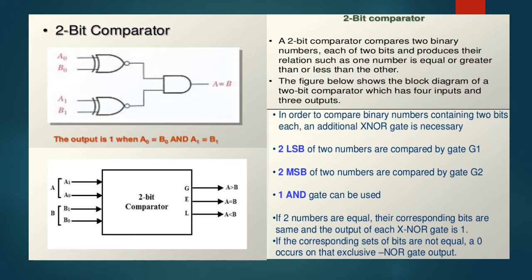If two numbers are equal, their corresponding bits are the same and the output of each XNOR gate is 1. If the corresponding set of bits are not equal, a 0 occurs on that exclusive NOR gate output.